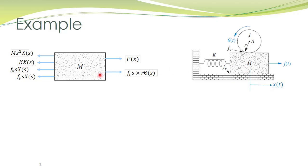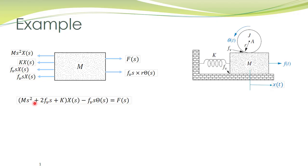We can now easily obtain the force balance equation. The sum of forces acting towards the right is equal to the sum of forces acting towards the left. The terms acting towards the left are brought to the left-hand side with a negative sign.